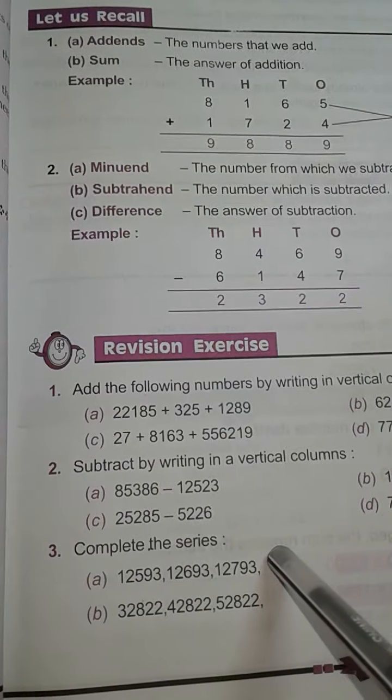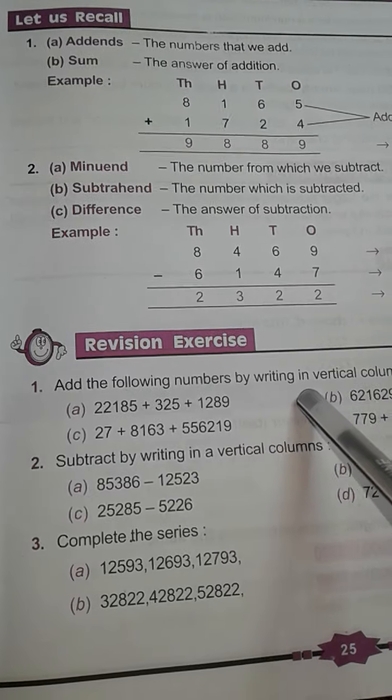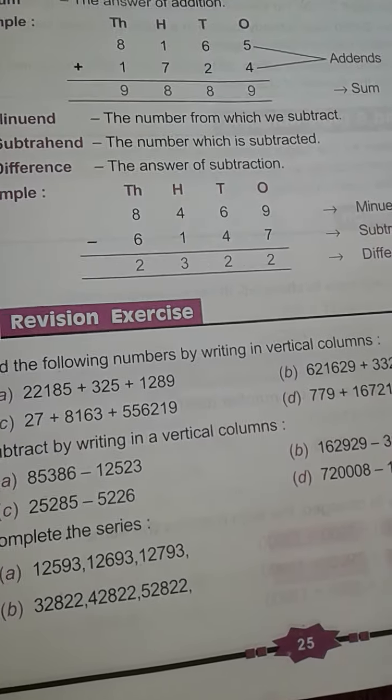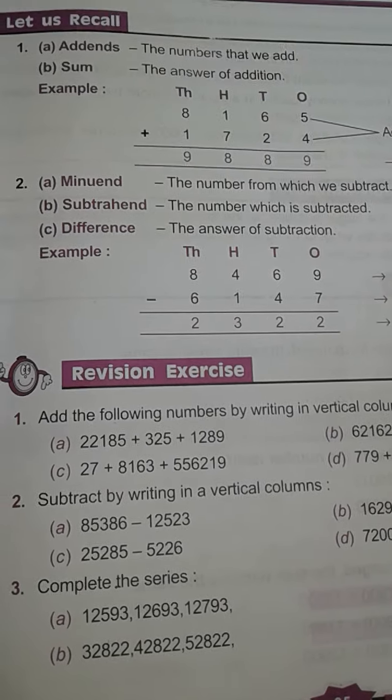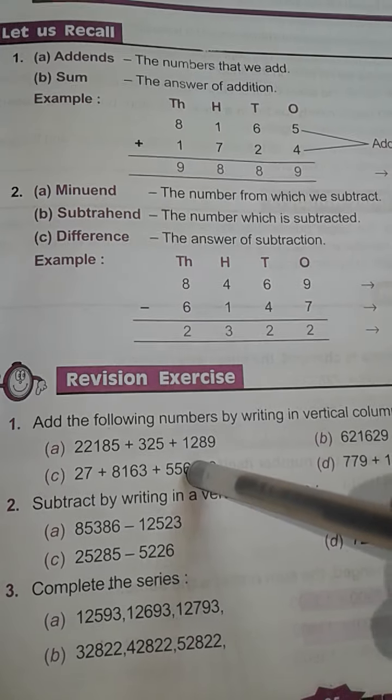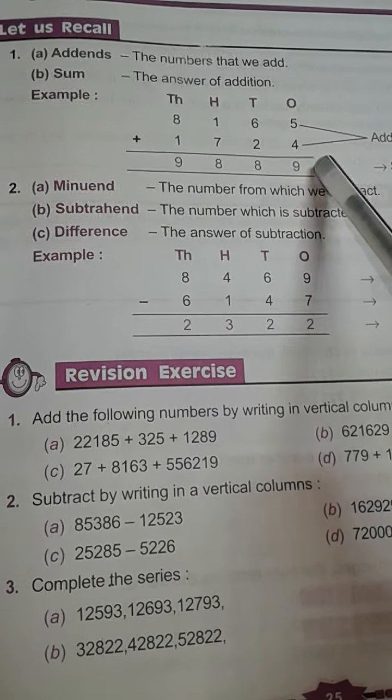Comes to revision exercise. Add the following numbers by writing in vertical columns. Here given in row, you have to write in columns. Like this, you have to arrange and write.